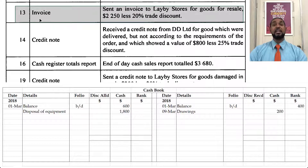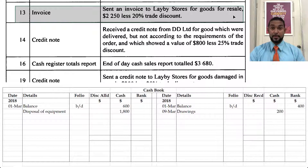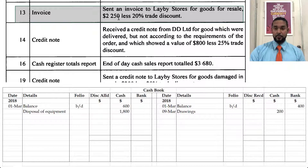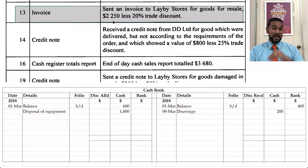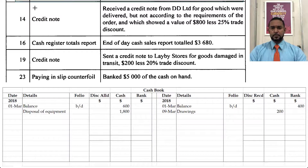Scrolling up a bit — there's another invoice. An invoice is for a credit transaction, so this item is not going to be recorded in the cash book. We sent an invoice to Lay By Stores for goods for resale, $2,250 less 20% trade discount. Again, trade discount is not recorded; it is calculated and deducted, and the net figure is what's used in double-entry bookkeeping. So that's irrelevant from a cash book perspective.